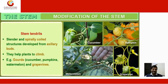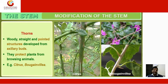Stem tendrils are slender, spirally coiled structures developed from axillary buds; they help plants to climb. Thorns are woody, straight, and pointed structures developed from axillary buds; they protect plants from browsing animals. Examples include citrus and bougainvillea.